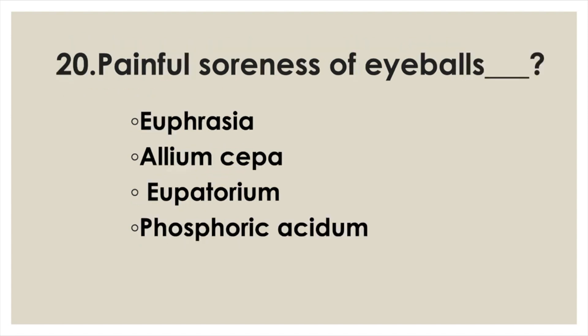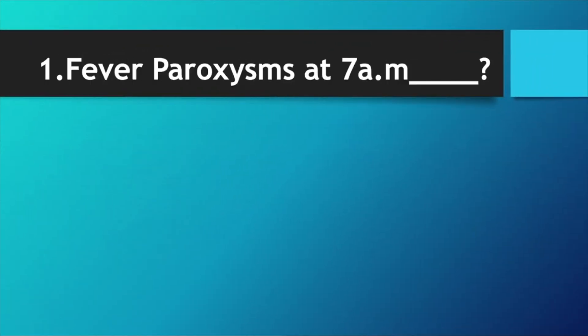Painful soreness of eyeballs: Option A: Euphrasia. Option B: Allium cepa. Option C: Eupatorium. Option D: Phosphoric acidum. Answer: Option C, Eupatorium. Fever paroxysm at 7 a.m.: Podophyllum.